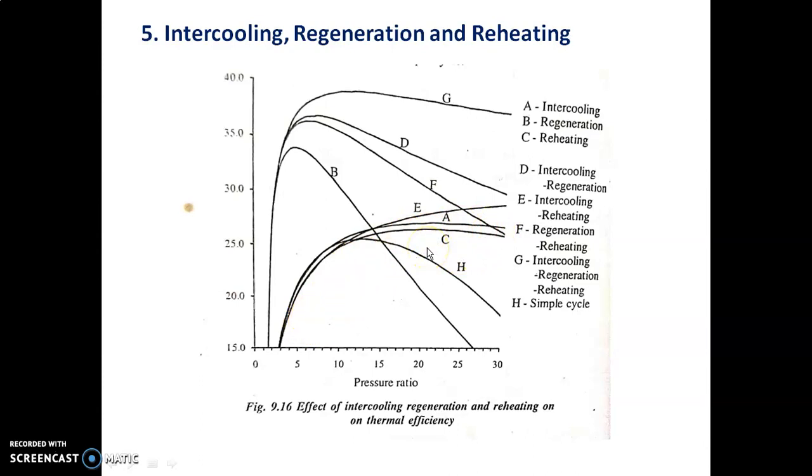Combining intercooling and reheating, and comparing with intercooling and regeneration, we can see regeneration and reheating combined gives maximum efficiency. Using intercooling, regeneration, and reheating together, you can achieve maximum efficiency, much higher than simple cycle. Simple cycle has the lowest efficiency. Using these methods individually or combined improves overall thermal efficiency.